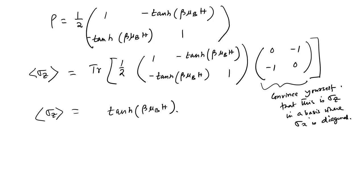This shows that in calculating quantum statistical averages of operators, the density matrix is quite helpful. Finding the density matrix only requires knowing the Hamiltonian of the system. We have done it for a simple case with spin-1/2 particles — just a 2×2 matrix — but in more complicated situations it could be a larger or even infinite-dimensional matrix.